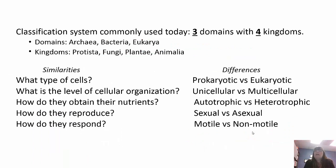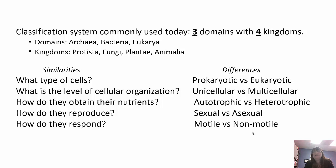We have three domains today: Archaea, Bacteria, and Eukarya. The kingdoms within Eukarya are Protista, Fungi, Plantae, and Animalia. There are similarities and differences among all living things. They all have cells, but some are prokaryotic and some are eukaryotic. They all have organization, but some are multicellular and some are unicellular. They all obtain nutrients, but some are autotrophic and some are heterotrophic. They all reproduce, but some are sexual and some are asexual. They all respond to stimuli, but some are motile and some are non-motile.